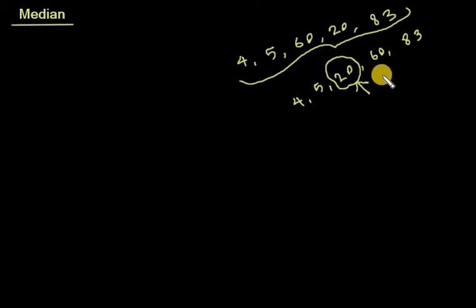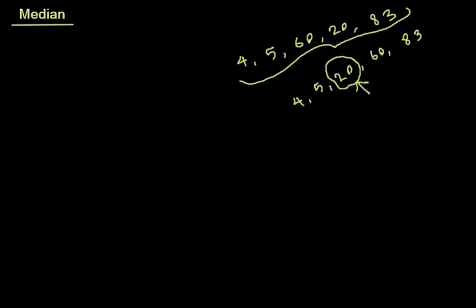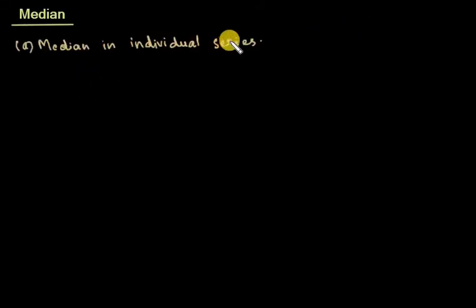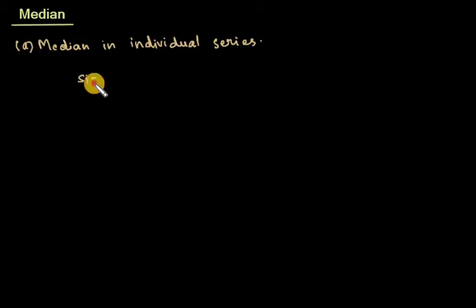Median is a positional average. We study median in individual series, median in discrete frequency distribution, and median in continuous frequency distribution. In the individual series case, numbers are arranged in ascending or descending order and the middle item is the median. It is also called the size of the (n+1)/2th item.